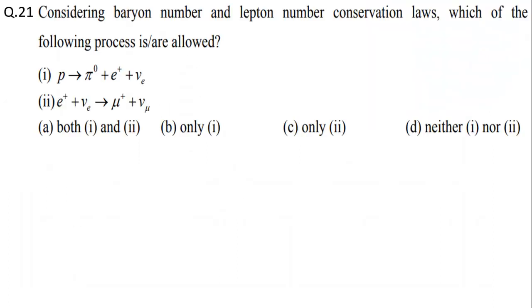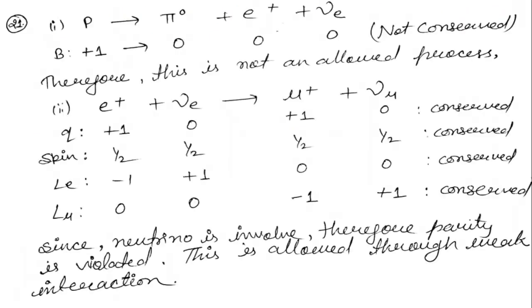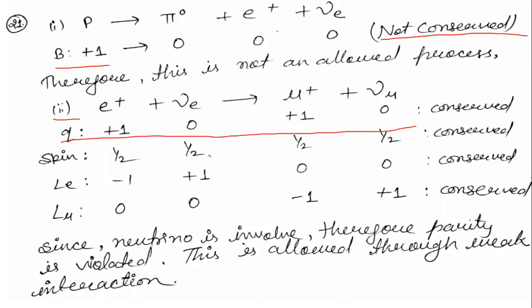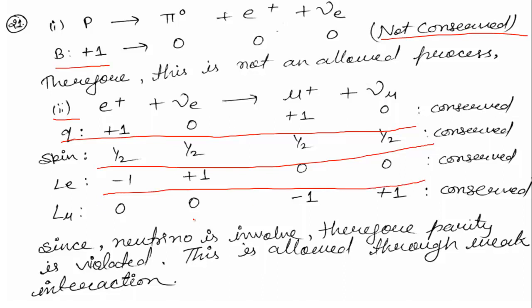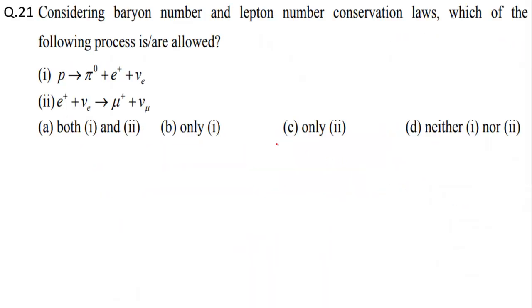Question 21: We check lepton number conservation laws. For the first process, baryon number is not conserved, so it is not allowed. For the second process: charge is conserved, spin is conserved; checking electronic lepton number — conserved; checking muonic lepton number — also conserved. So the first process is not conserved but the second process is. Option C is correct: only the second process is allowed.